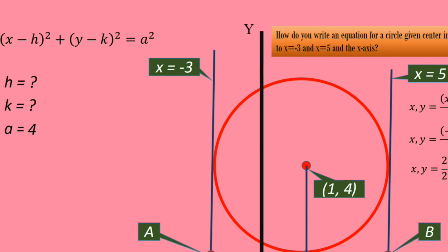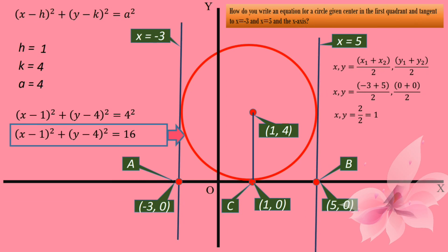We know all the required values: h=1, k=4, and a=4. Plug in these values in the equation. (x-1)²+(y-4)²=4². Finally, the equation is (x-1)²+(y-4)²=16. This is the equation of the circle.